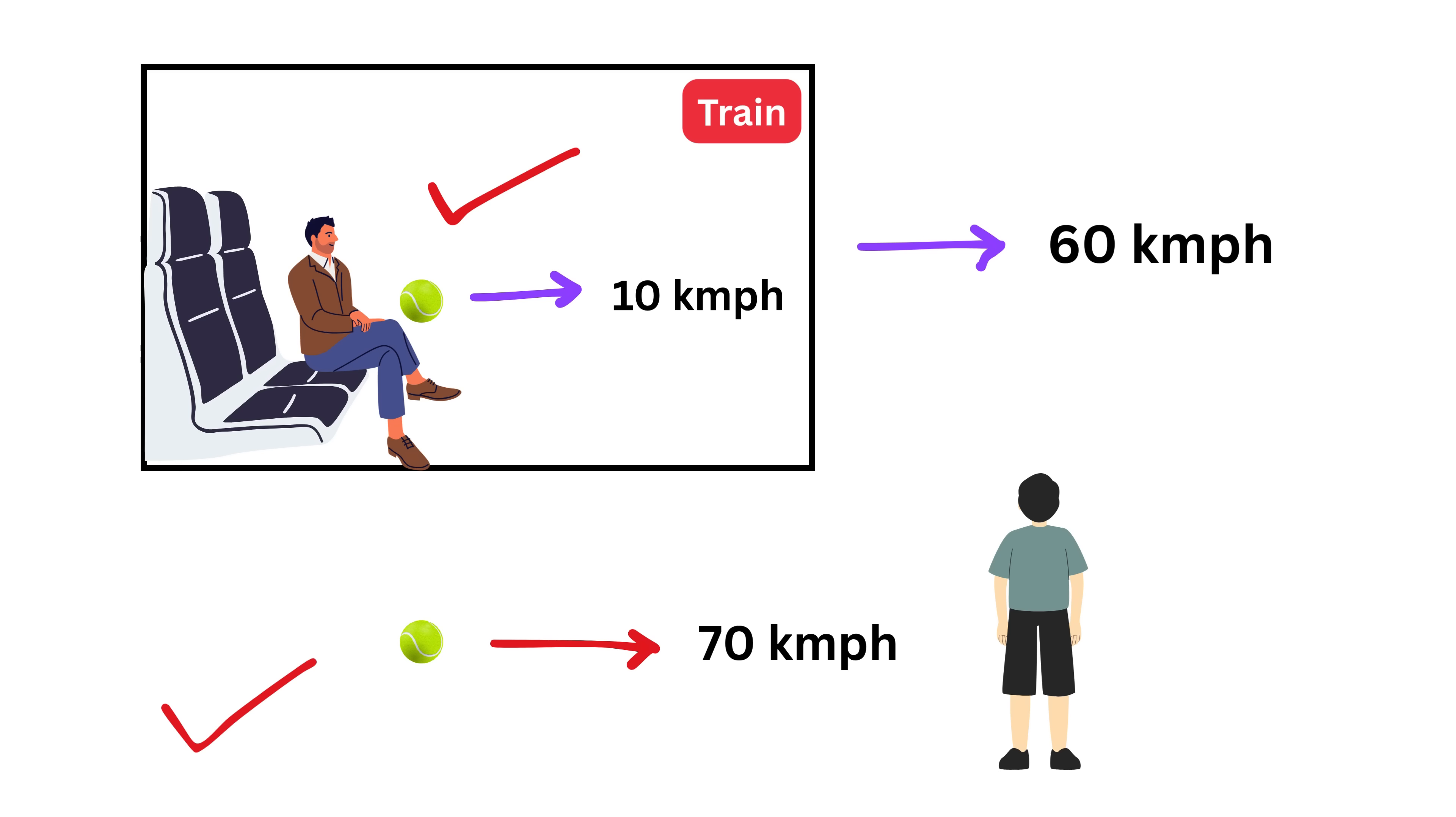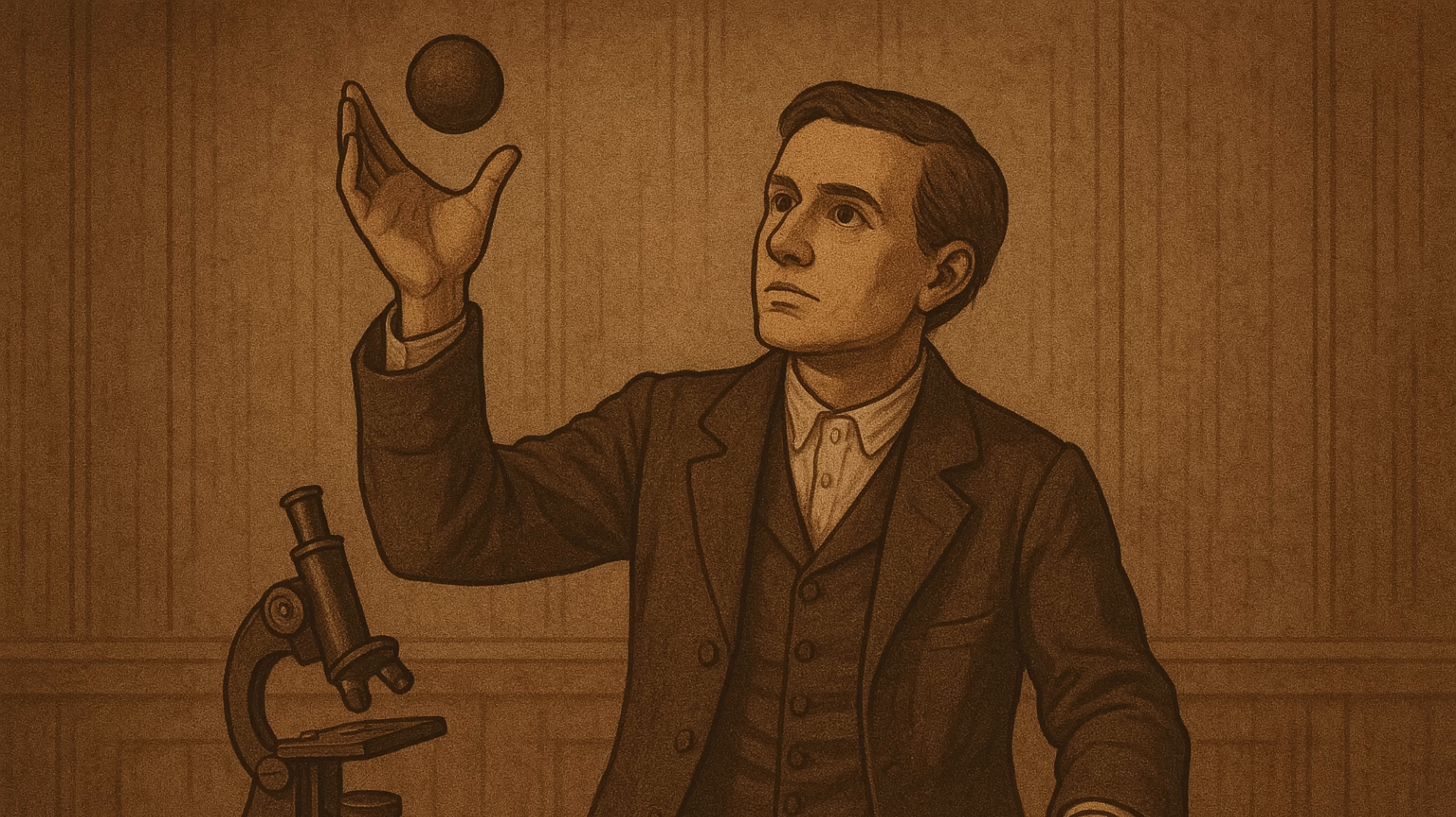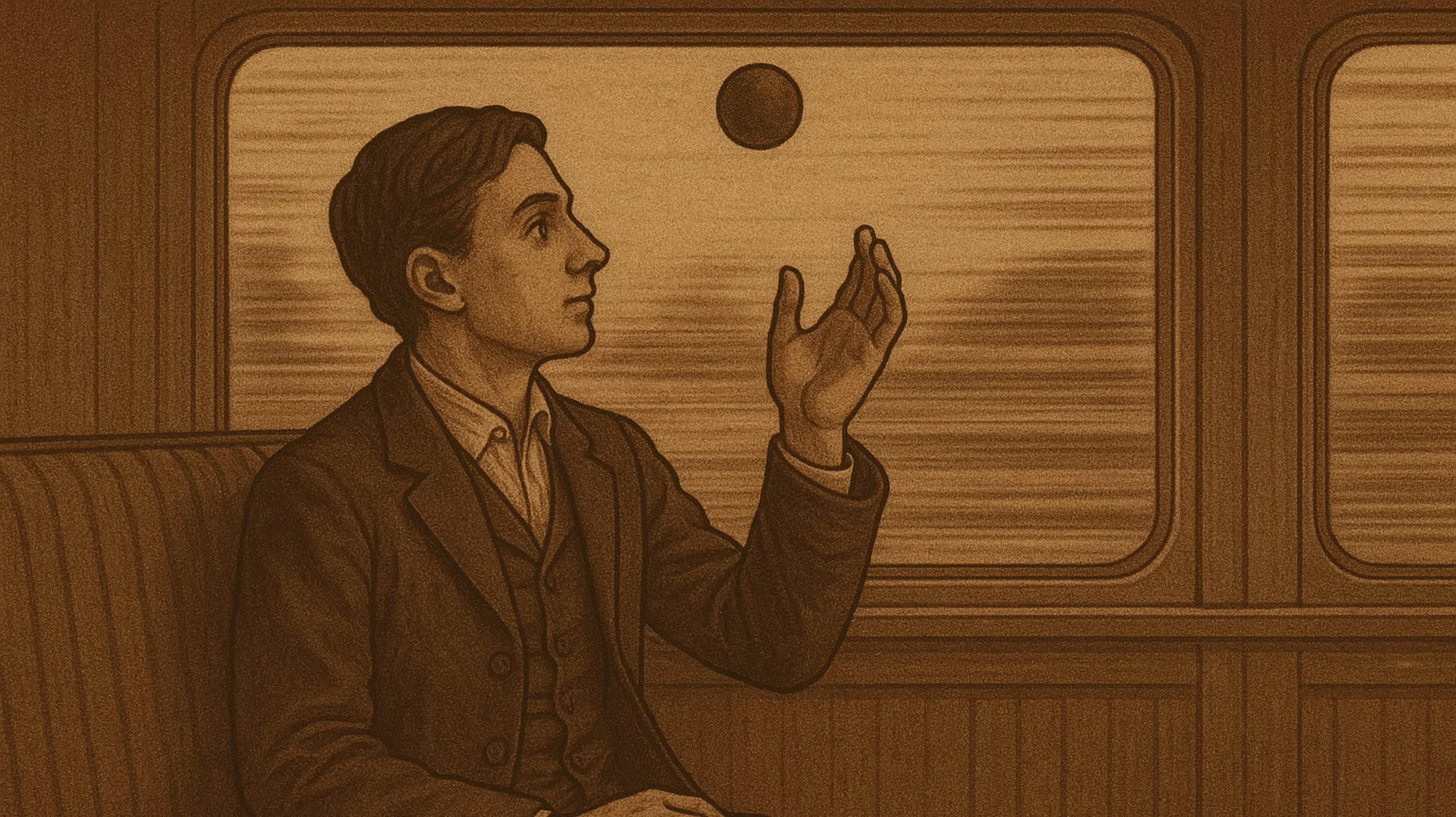This means the speed of an object changes based on who is observing that object. If I am sitting inside the train, I see the ball moving at 10 kilometers per hour, but for a person standing outside, the ball appears to move at 70 kilometers per hour. But classical mechanics also believed that certain things in the universe are always fixed and do not change, no matter who is observing.